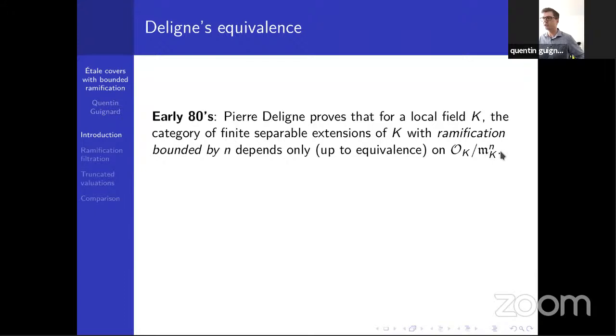First one should notice that we can have two different local fields that have the same residue ring for some n. It is even possible to have two such local fields with different characteristics, like 0 and p. This was the original motivation for Deligne - it was a way to formalize reasoning which had been used many times before for translating results from characteristic 0 to characteristic p, or possibly the converse.